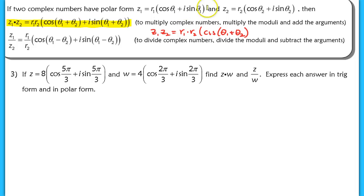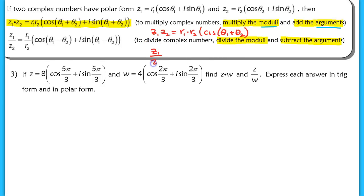In cis notation: to multiply complex numbers Z1 and Z2, multiply the two moduli and add the arguments: Z1·Z2 equals R1·R2 cis(θ1 + θ2). To divide complex numbers, divide the moduli and subtract the arguments: Z1/Z2 equals (R1/R2) cis(θ1 − θ2).